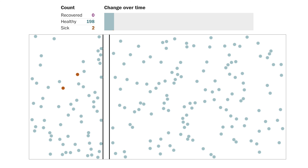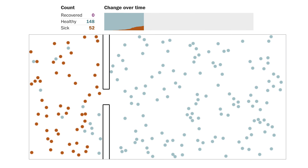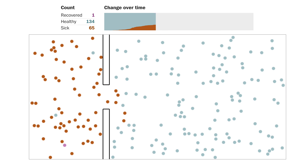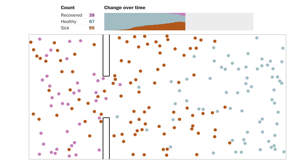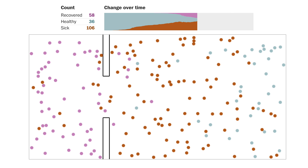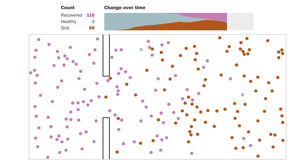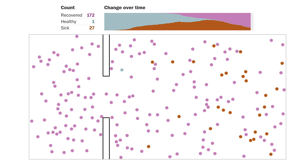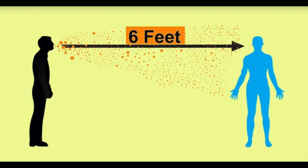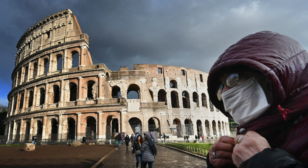As you can see in this simulation, it's going to be impossible to completely seal off the sick population from the healthy one. There are other ways to slow down the outbreak. Health officials often encourage people to avoid public gatherings, stay at home more often, and keep distance from others — also known as social distancing. If people are less mobile and interact less with each other, the virus has fewer opportunities to spread.